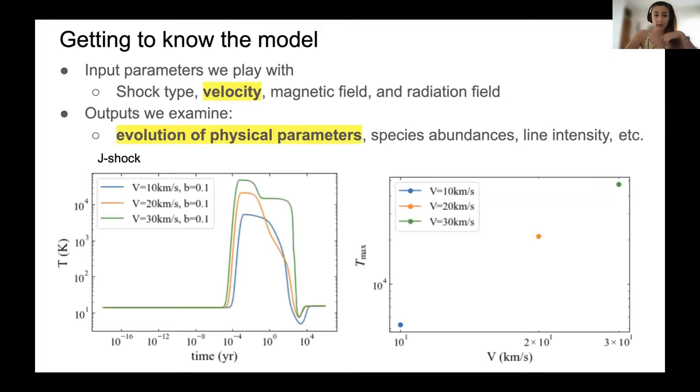For example, this is one thing that we tried out. For a J-shock, we tried different velocities. And here in this plot on the left, you can see how the temperature of these different models changes with time. We found out that if we have a shock of higher velocity, for instance, this green line, we will get a higher temperature.